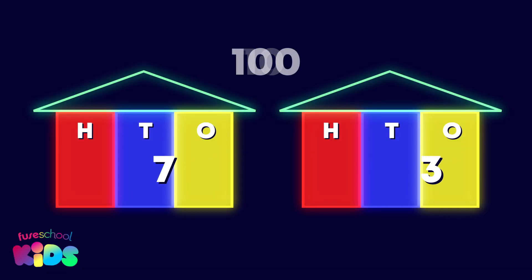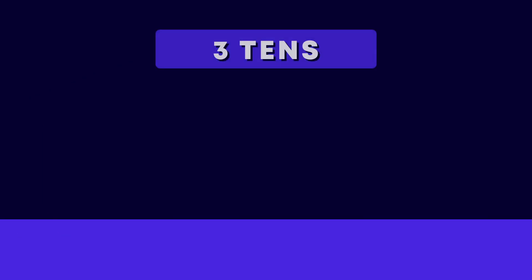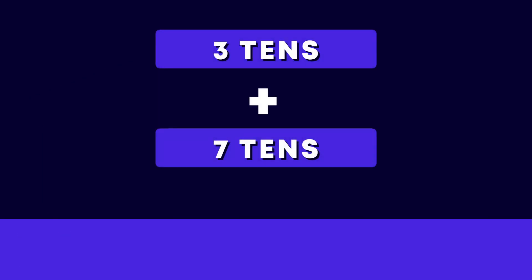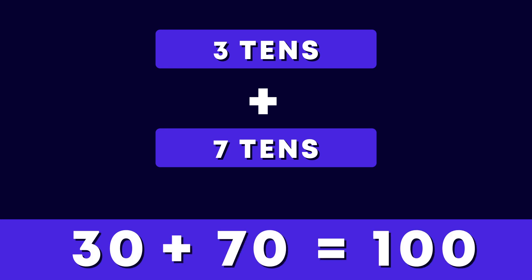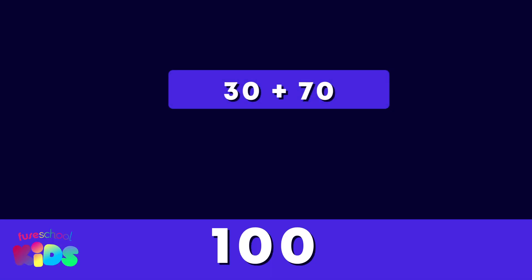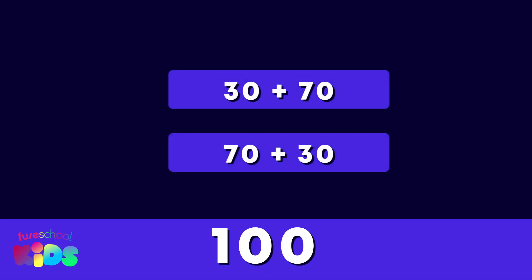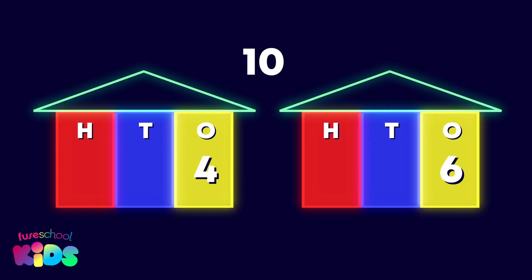The three and the seven are moving to the tens place. What are the numbers in the number pair now? Three tens is thirty, seven tens is seventy. Thirty and seventy make one hundred. Thirty plus seventy equals one hundred, and seventy plus thirty equals one hundred.